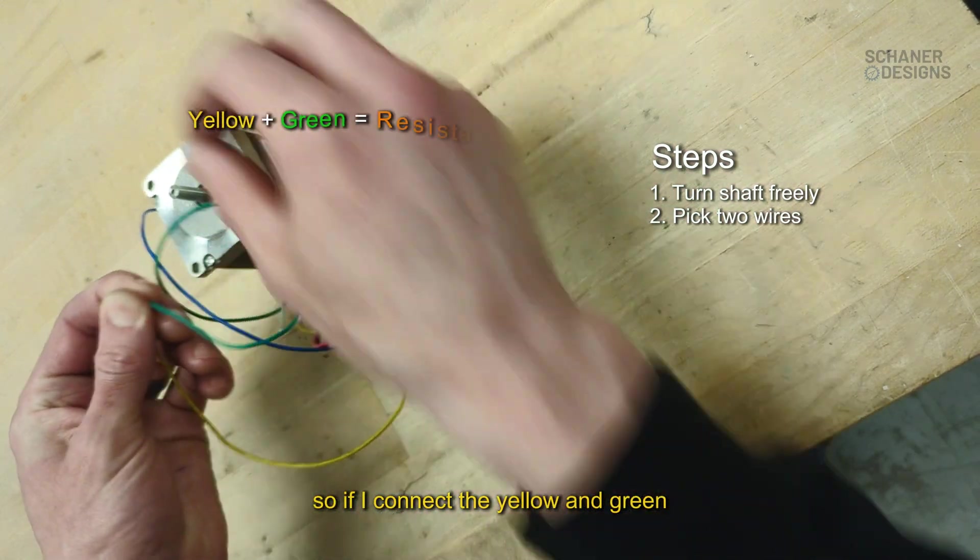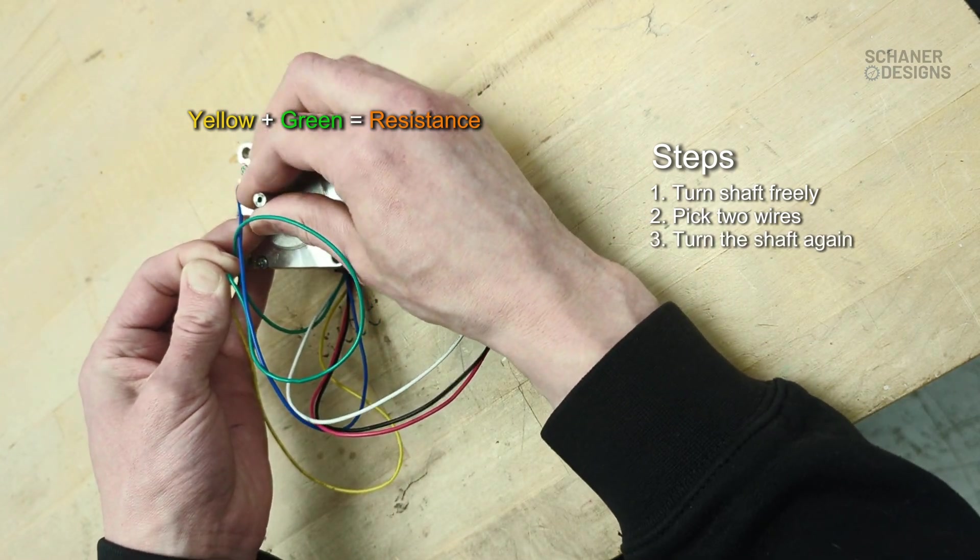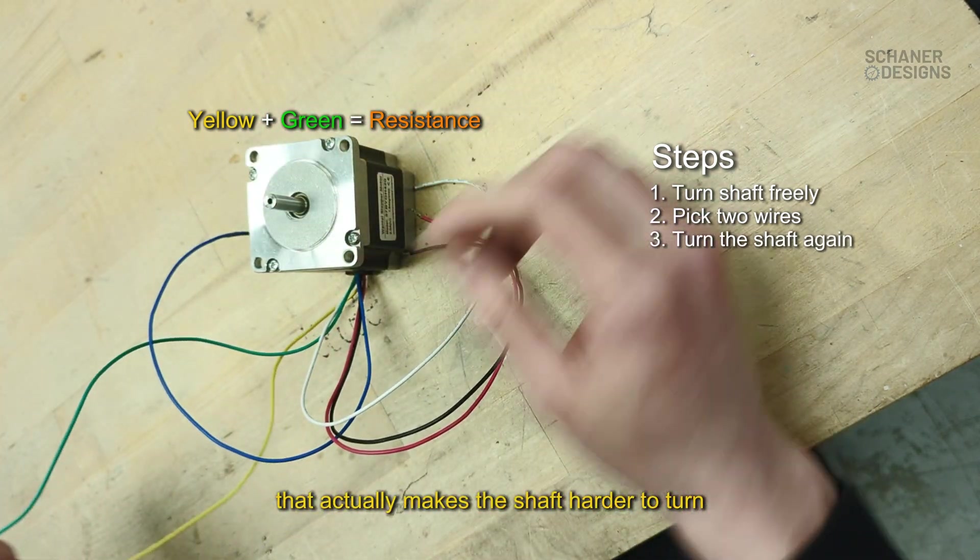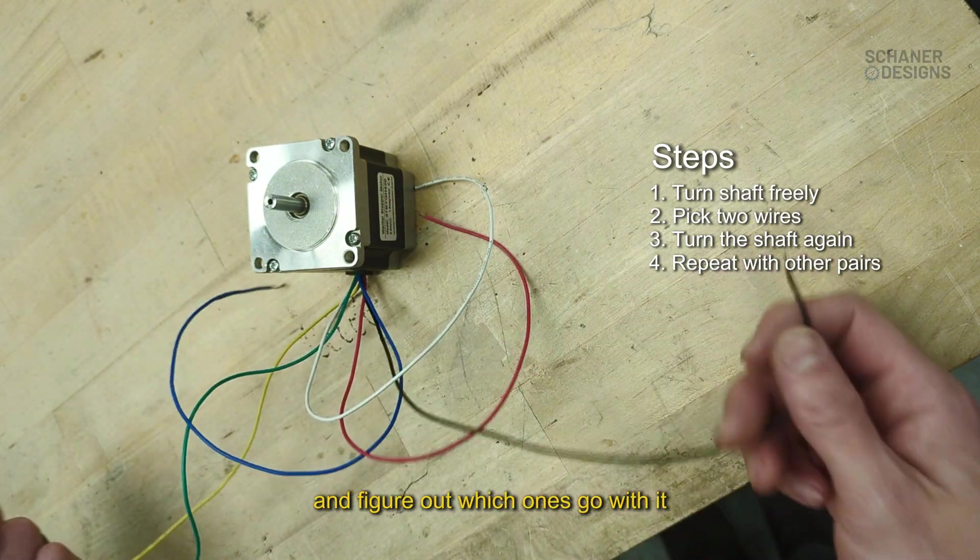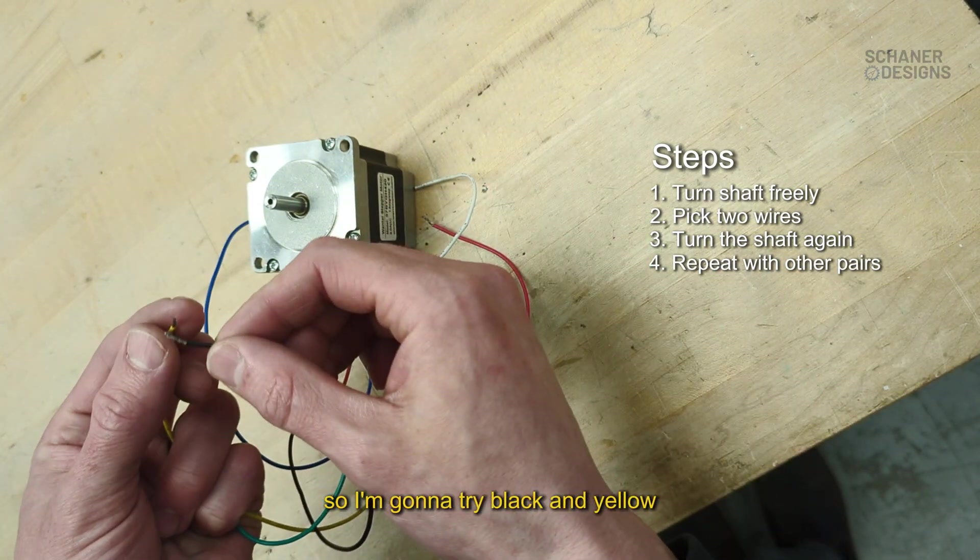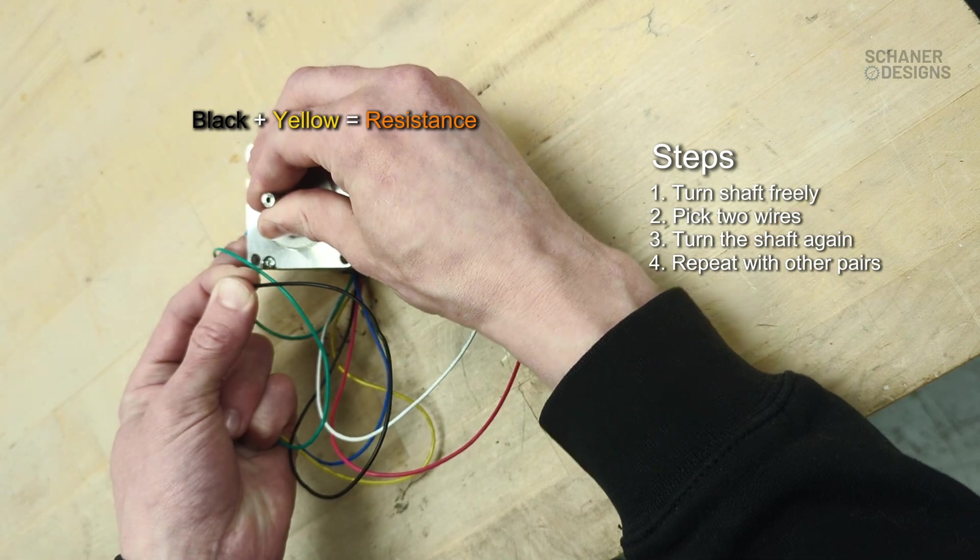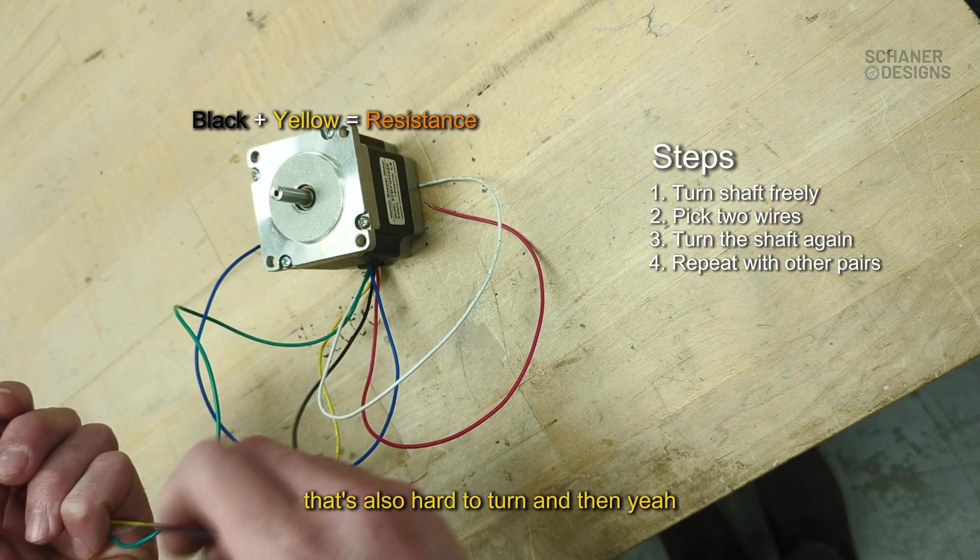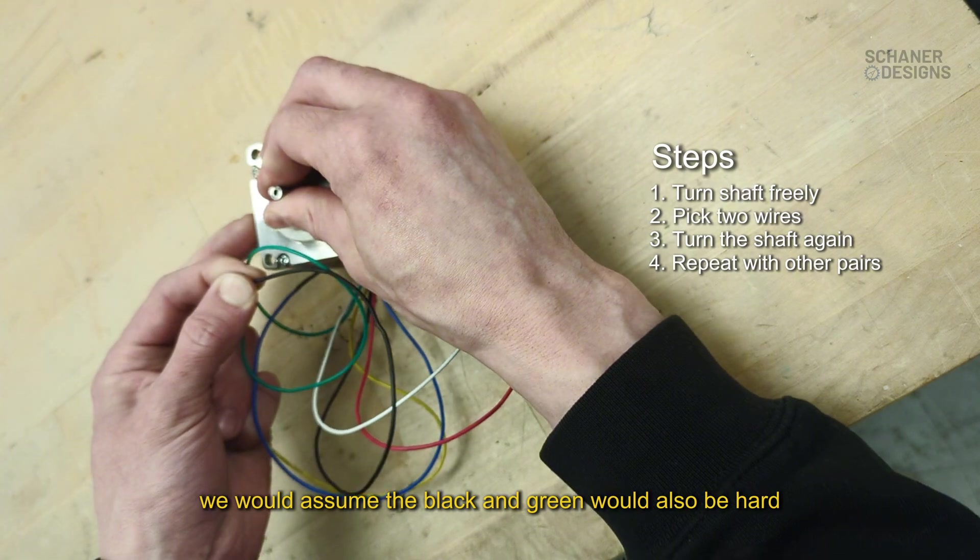If I connect the yellow and green, that actually makes the shaft harder to turn. So I'm going to try connecting some other wires and figure out which ones go with it. Black and yellow is also hard to turn, and we would assume that black and green would also be hard.